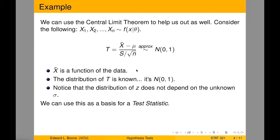So x bar is a function of the data. The distribution is known, at least approximately. And also, it doesn't depend on what mu is, because we're using s, which is our standard deviation from our sample, instead of sigma, because we don't know that. And we can use this for a basis of a test statistic.